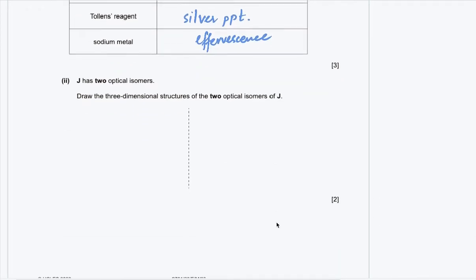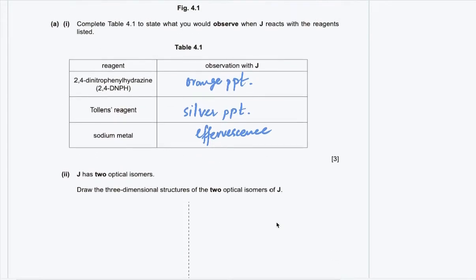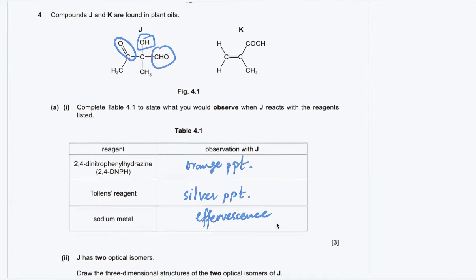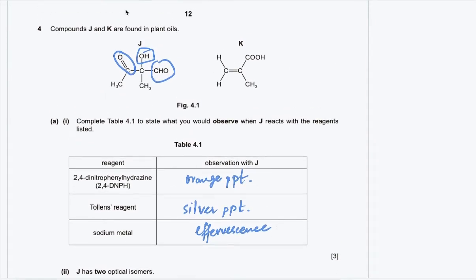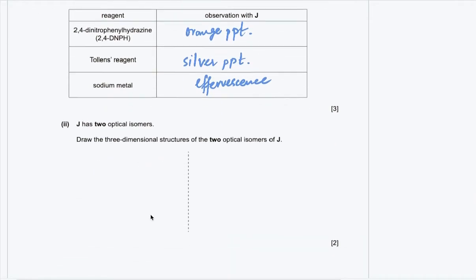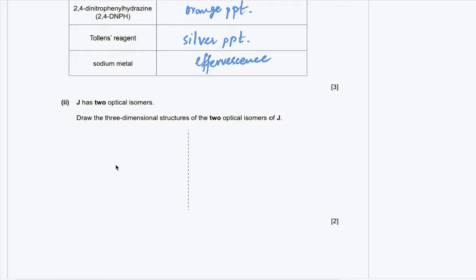Part A2: J has two optical isomers. Draw the three-dimensional structures of the two optical isomers of J. An optical isomer requires one carbon attached to four different groups of atoms — a chiral center.